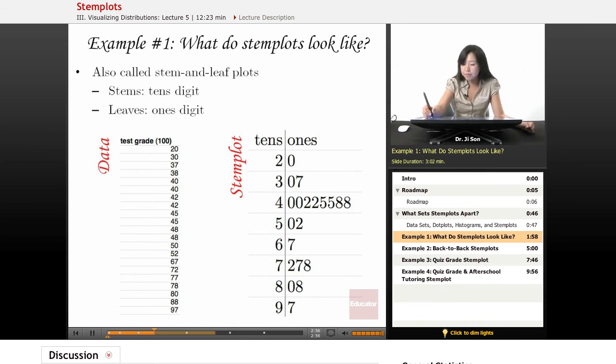So what I've taken, I'll put it in a different color, is I've taken this number and I've split it apart into two and zero. Now I look at the next set. There are three people who scored in the 30s. But I'm missing one of them. So it should be a zero, a seven, and also an eight.